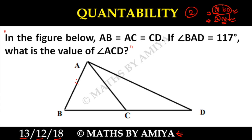In this figure we have AB equal to AC equal to CD. Always try to write all the given data in the figure itself. It is given AB equal to AC equal to CD, so I marked those equal. Then we have angle BAD equal to 117 degrees, so I am writing that complete value as 117 degrees in the figure.